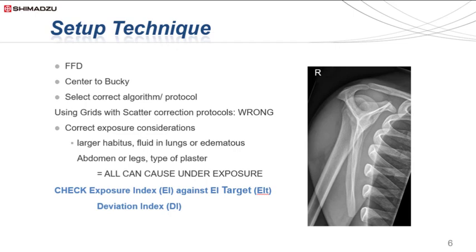Lastly, by not applying correct exposure considerations — for example, fluid in the lungs or an edematous abdomen — an underexposed noisy image will be yielded. When assessing images, the bottom right hand corner of the image will display the exposure index, exposure index target, and deviation index for achieving the perfect x-ray.